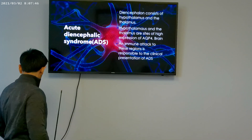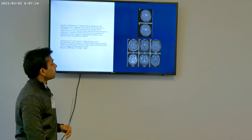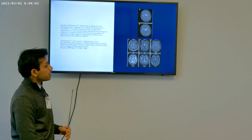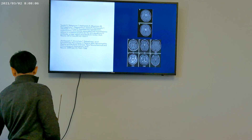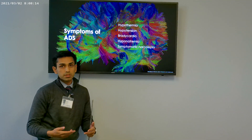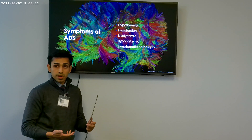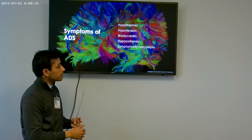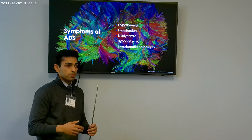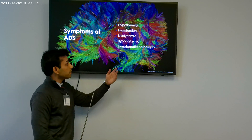Looking at the image here, we see hyperintensities of the hypothalamus — this patient had acute diencephalic syndrome plus acute brain stem syndrome — showing hyperintensities of the hypothalamus and periventricular white matter. The symptoms of ADS include hypothermia, hypotension, bradycardia, hyponatremia, and symptomatic narcolepsy, because the hypothalamus controls temperature, blood pressure, heart rate, and ionic balance.